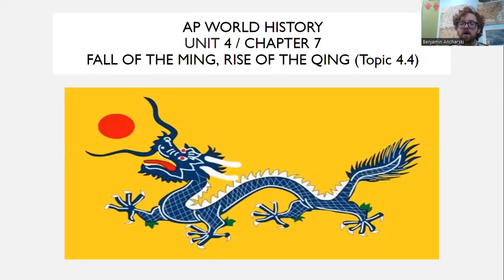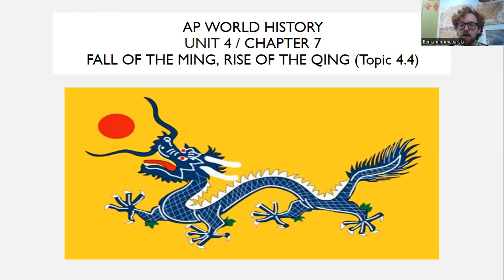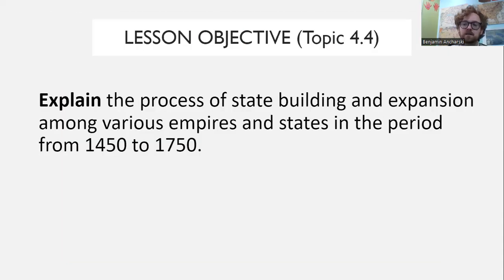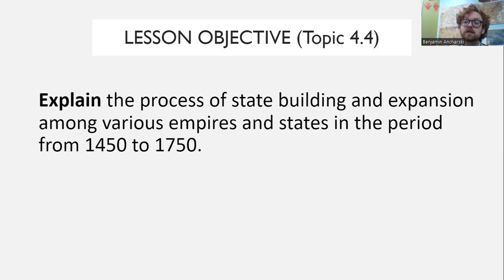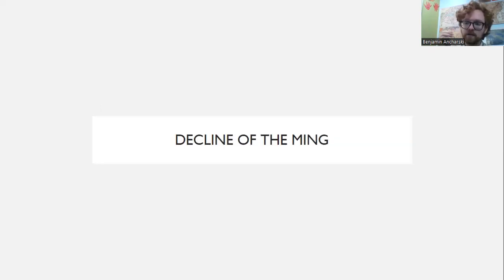Let's talk about the end of the Ming Dynasty — a little bit of review — and then the rise of the Qing Dynasty. Our lesson objective continues: how do empires form, what are their political systems, what policies do they create? We're looking at East Asian societies and how they react to European maritime presence — both in the Ming and the Qing Dynasty.